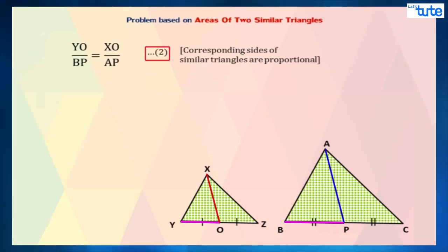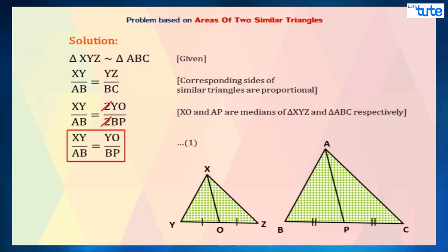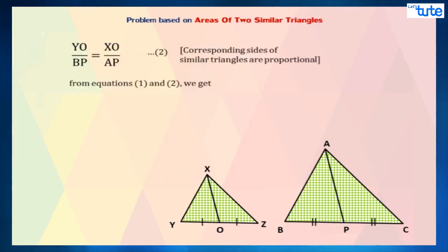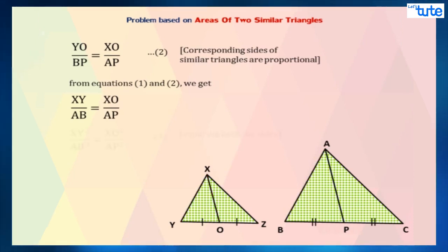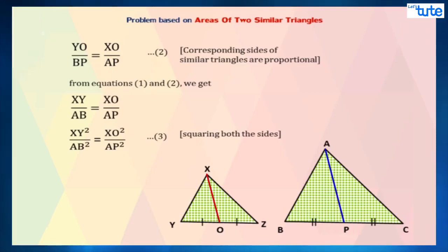From equation 1, we know that XY upon AB equals YO upon BP. And from equation 2, we know that YO upon BP equals XO upon AP. So from both these equations, we can say that XY upon AB equals XO upon AP. By squaring both sides, we get XY square upon AB square equals XO square upon AP square. Consider this as equation 3.